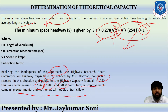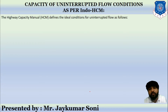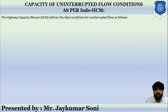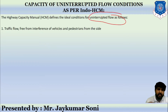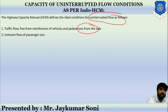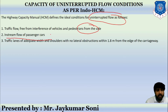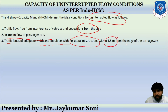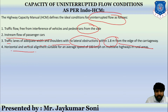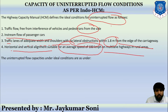Now let us discuss the capacity of uninterrupted flow conditions as per the Indo HCM model. HCM stands for Highway Capacity Manual. It defines the ideal conditions for uninterrupted traffic flow: first, traffic flow free from interference of vehicles and pedestrians from the side; second, in-stream flow of passenger cars; third, traffic lanes of adequate width and shoulder with no lateral obstruction within 1.8 meters from the edge of the carriageway; fourth, horizontal and vertical alignment suitable for an average speed of 100 km/h on multilane highways in rural areas.